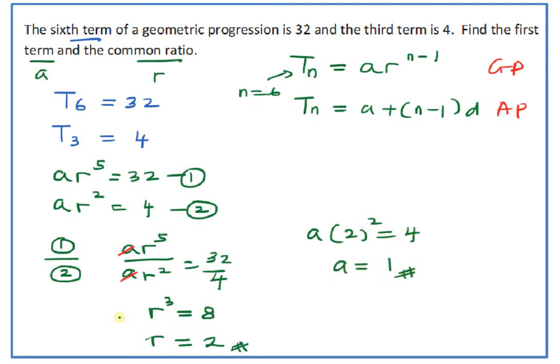That's the final answer. The first term equals 1 and the common ratio equals 2.